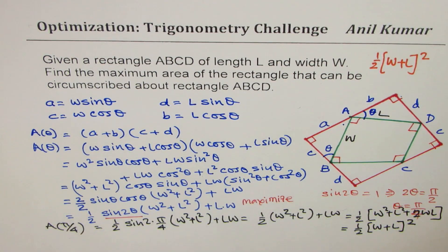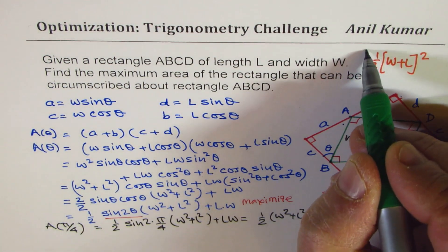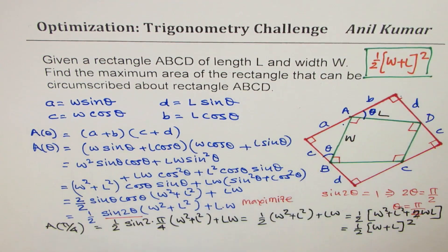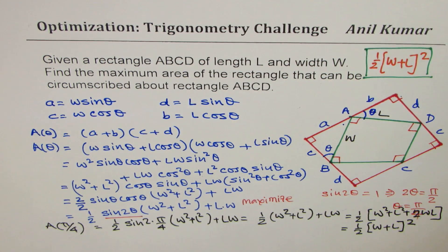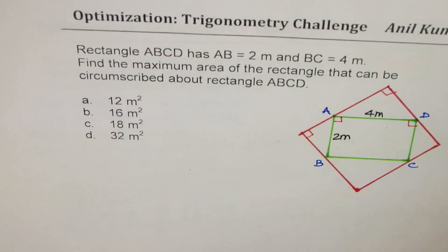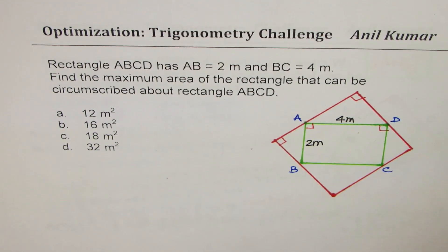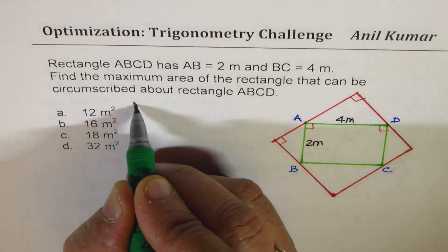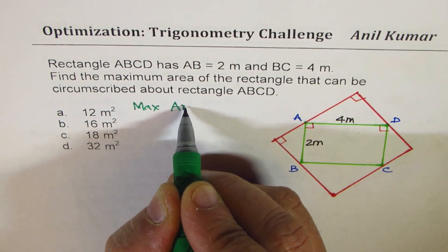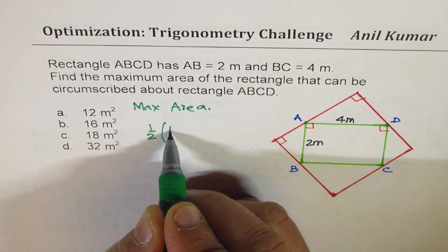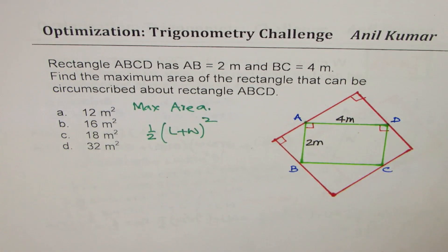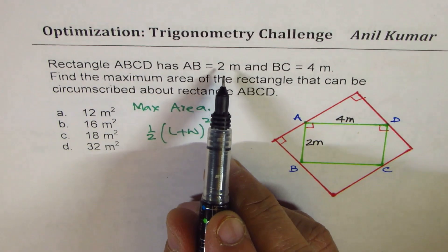So we have a general expression now, which is that the maximum area is half of W plus L whole square. That is the maximum area for a rectangle which circumscribes another rectangle of length L and width W. Is that clear? So clearly, as we have seen here, that is what we get. Now, using this result, we can easily answer any multiple choice question based on this. So we know maximum area is going to be half of length plus width whole square.